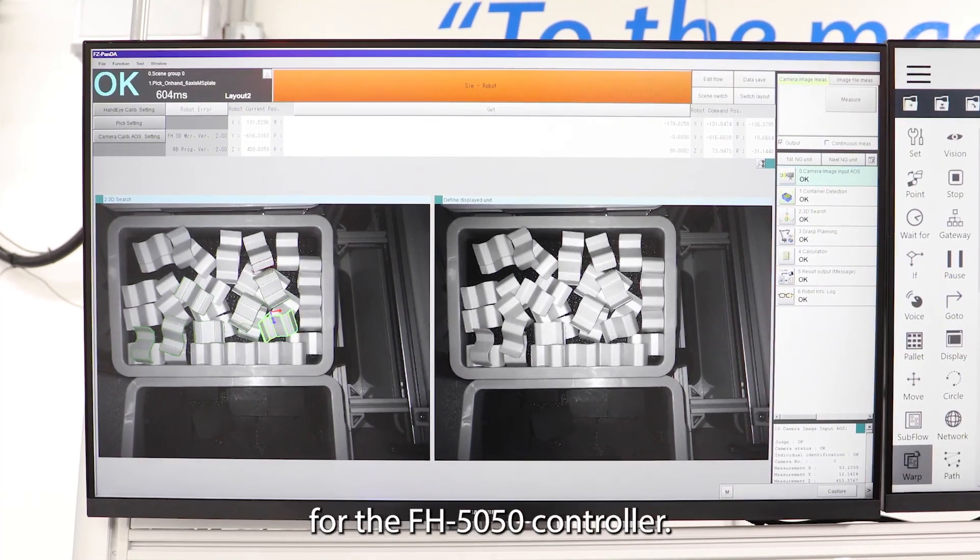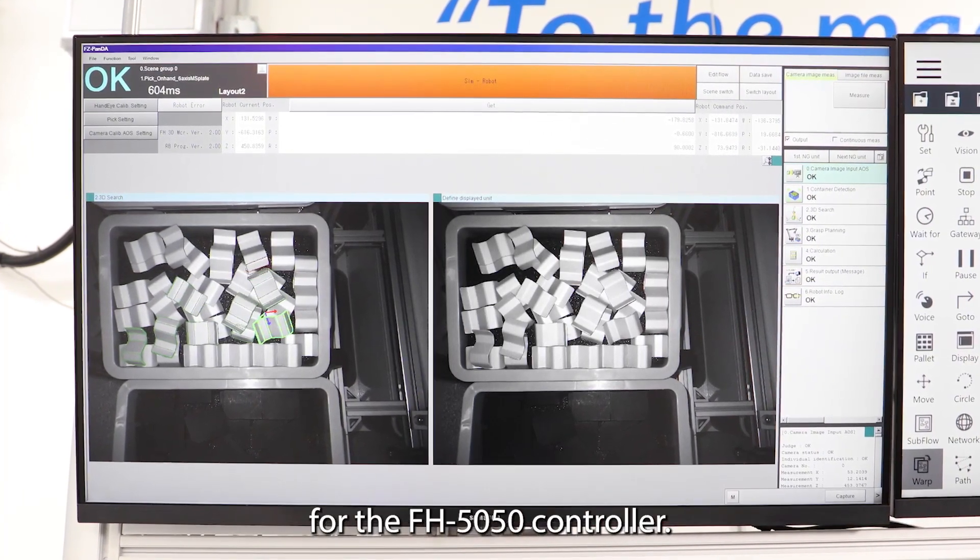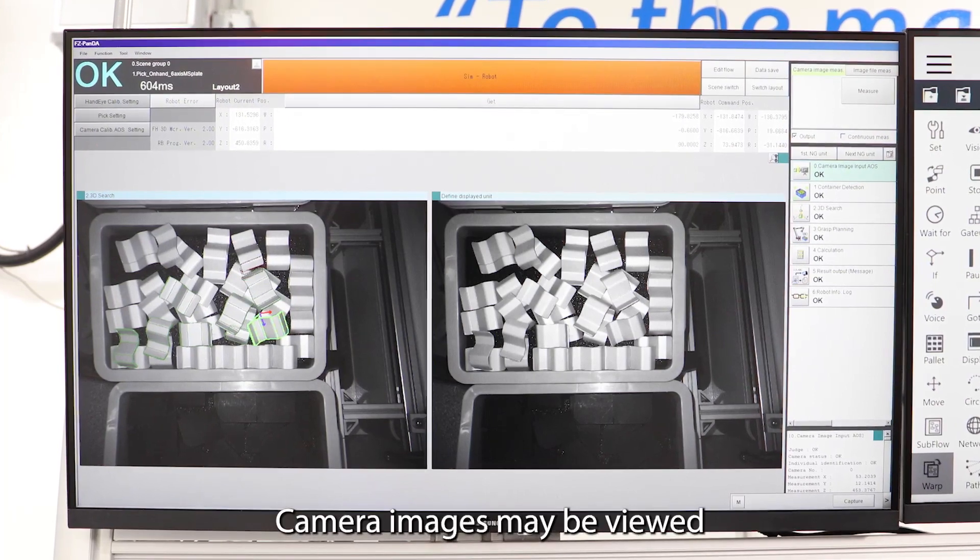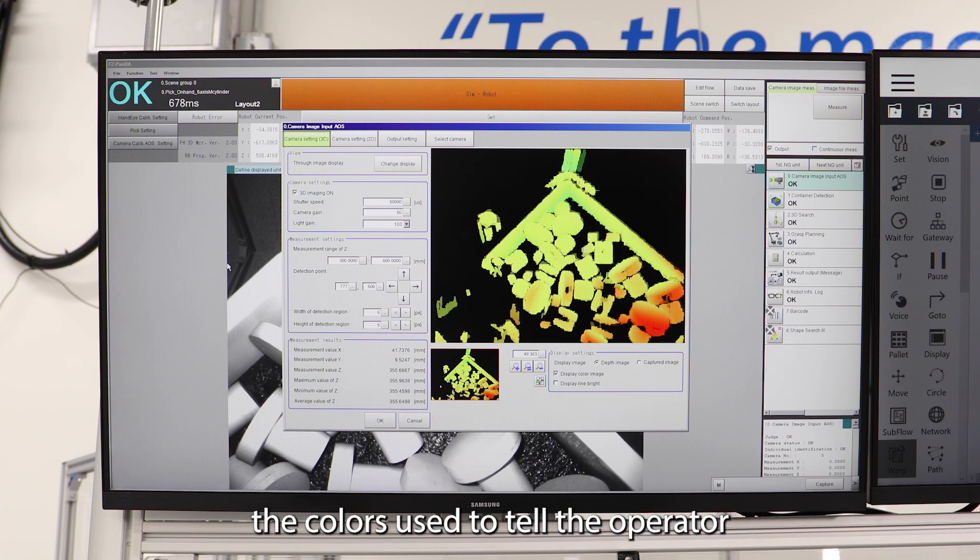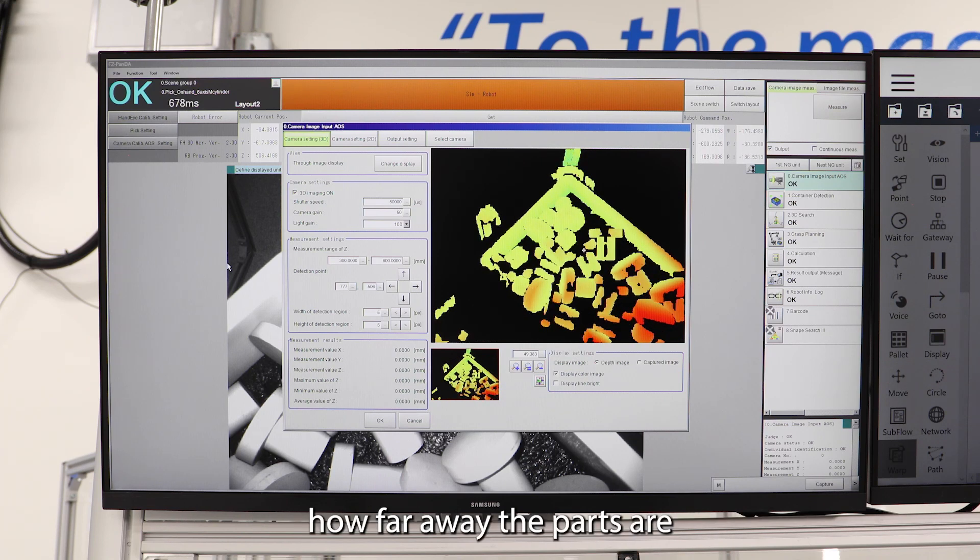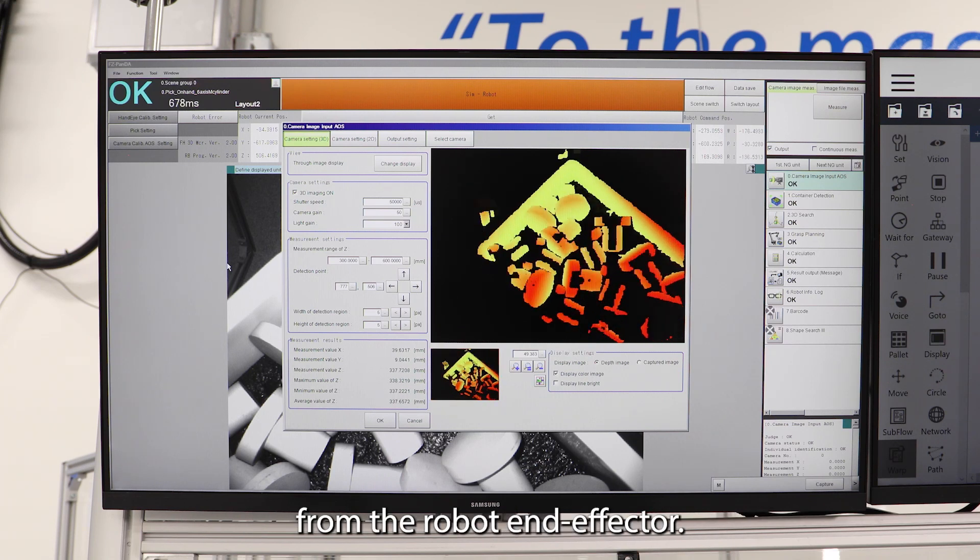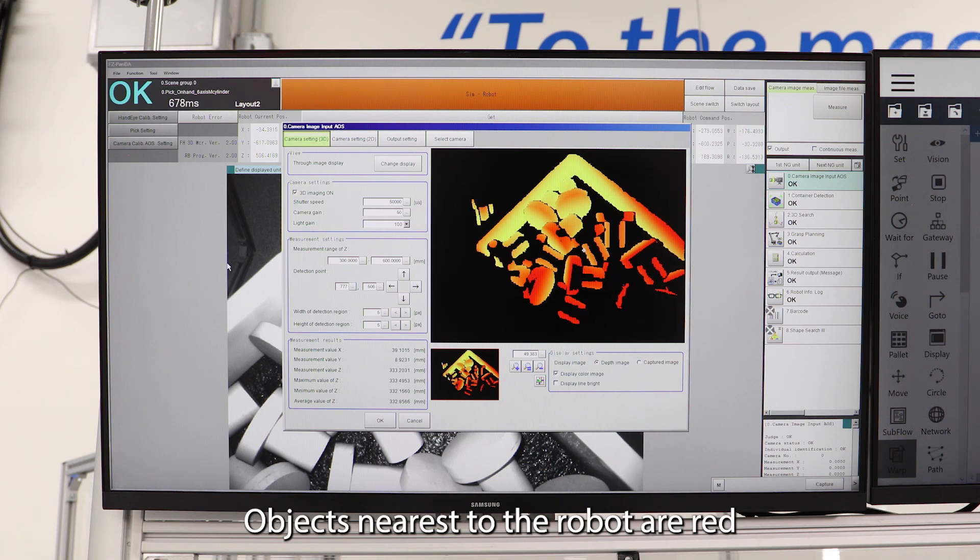This is the user interface for the AFH 5050 controller. Camera images may be viewed in a number of different ways. In this example, the color is used to tell the operator how far away the parts are from the robot end effector. Objects nearest to the robot are red and the ones far away are green.